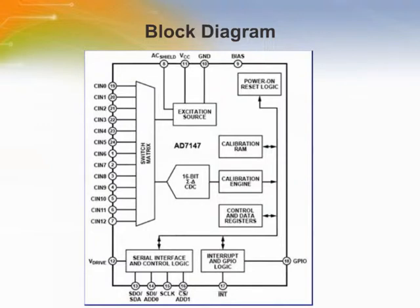This is the block diagram of the AD7147 CDC. The internal circuitry consists of a 16-bit sigma-delta converter that can change a capacitive input signal into a digital value. A switch matrix routes the 13 input signals to the CDC, and the result of each capacitance-to-digital conversion is stored in on-chip registers. The host subsequently reads the results over the serial interface.